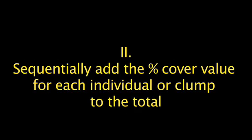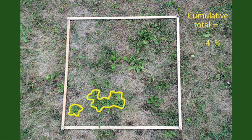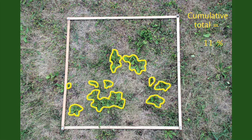Another method of estimating percent cover is to determine a cover value for each plant or group of plants, then add that value to the cumulative total. Here is an example of estimating the cover of Plantago using 1% increments with the cumulative total announced: 1, 2, 3, 4, 5, 6, 7, 7.5, 8, 8.5, 9, 10, 11, 12, 13, 14, 15, 15.5, 16.